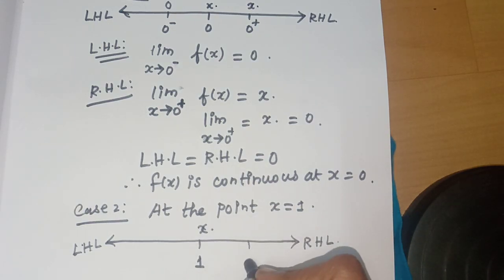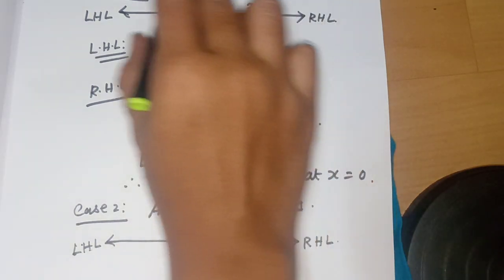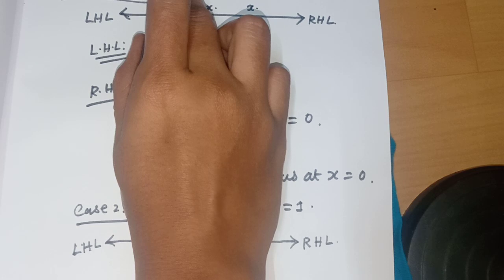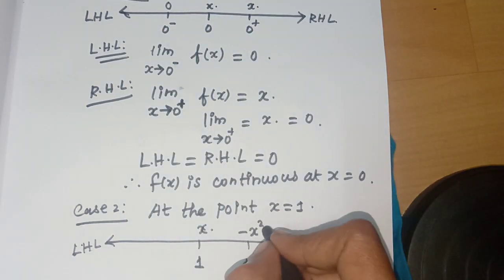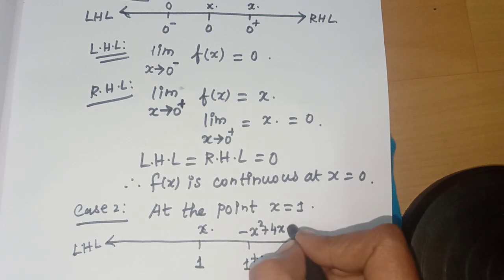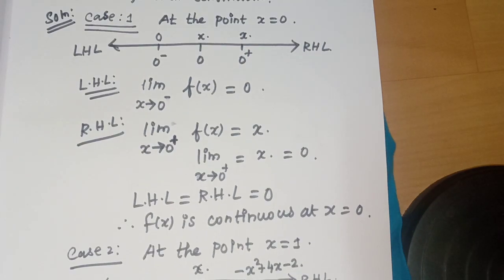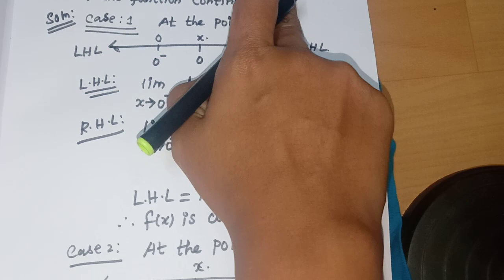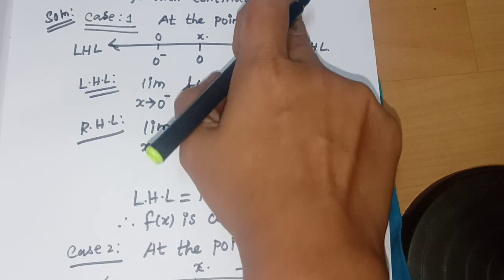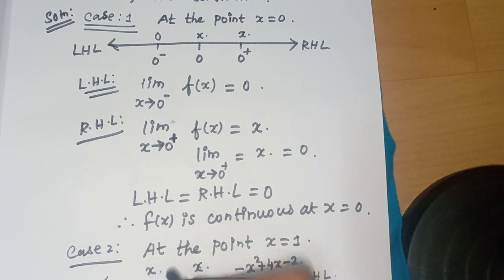For the Right Hand Limit, we approach from 1⁺, so we use the function f(x) = -x² + 4x - 2. For the Left Hand Limit, we approach from 1⁻, where 0 ≤ x < 1, so we use f(x) = x.